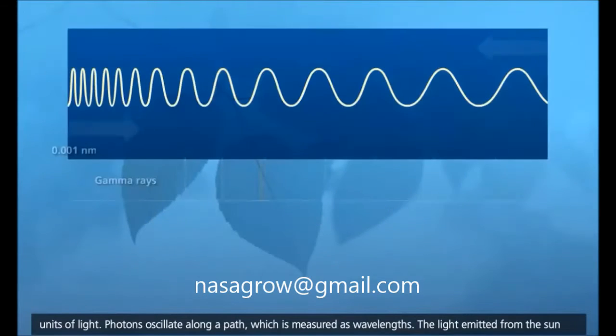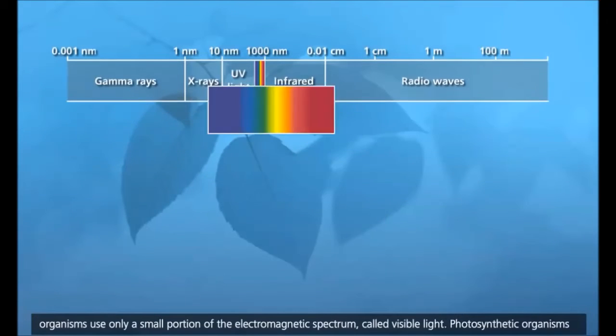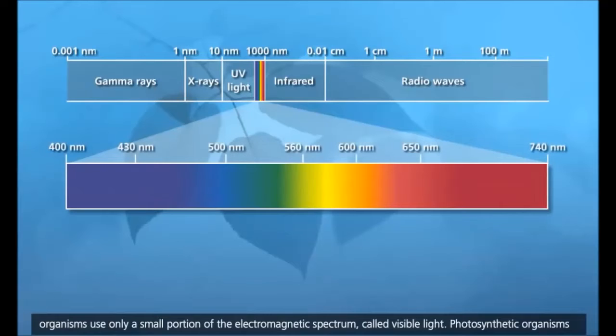The light emitted from the sun contains photons in a wide spectrum of wavelengths, called the electromagnetic spectrum. Photosynthetic organisms use only a small portion of the electromagnetic spectrum, called visible light.